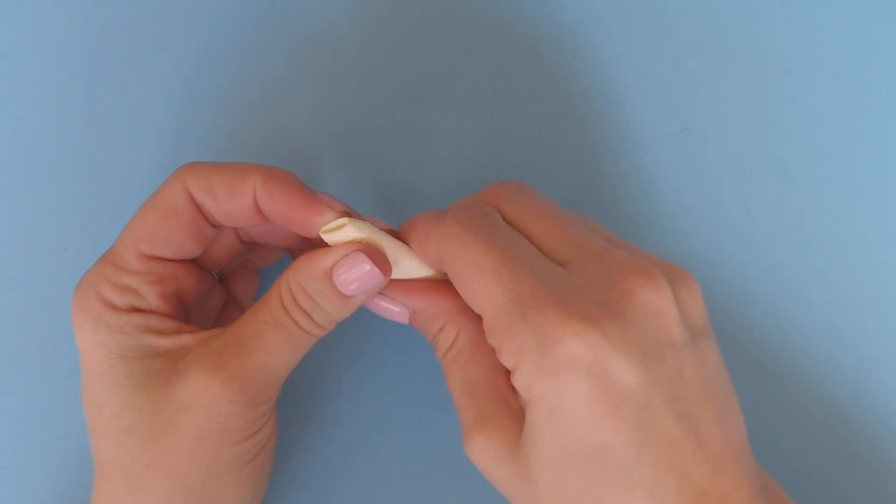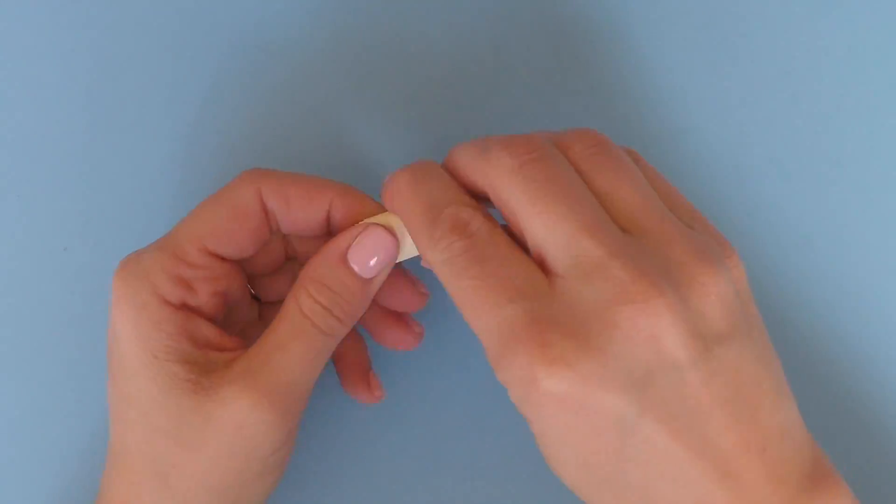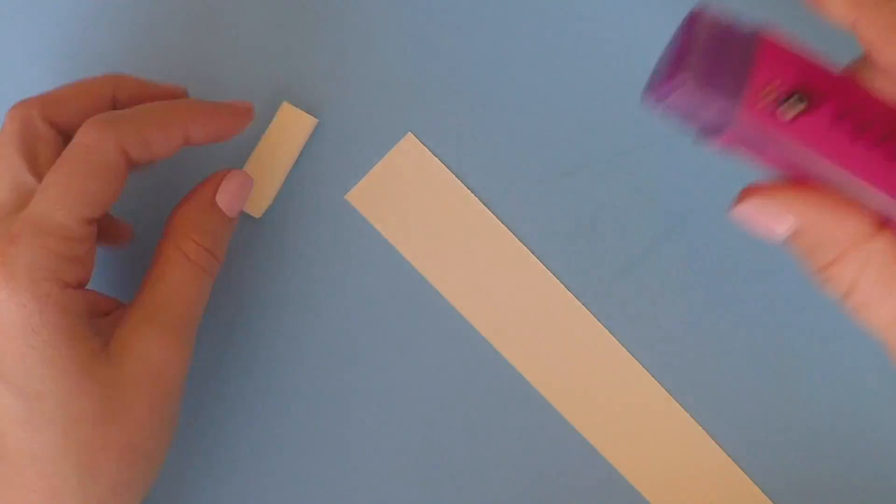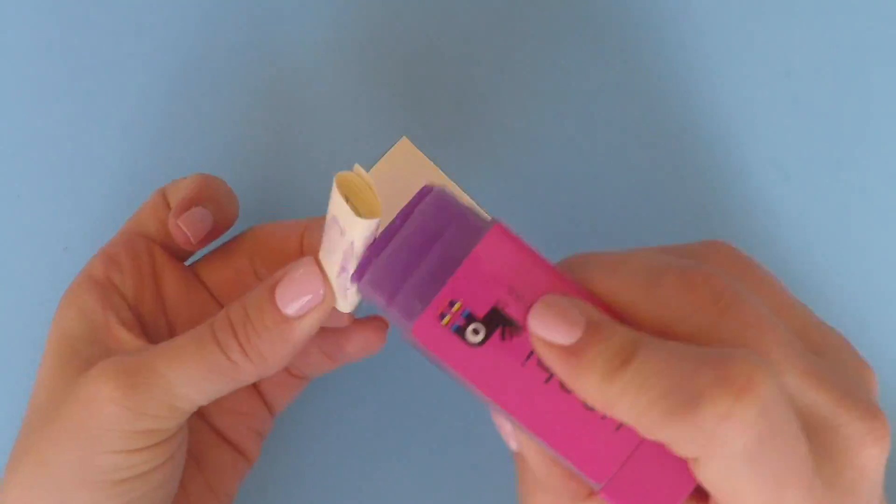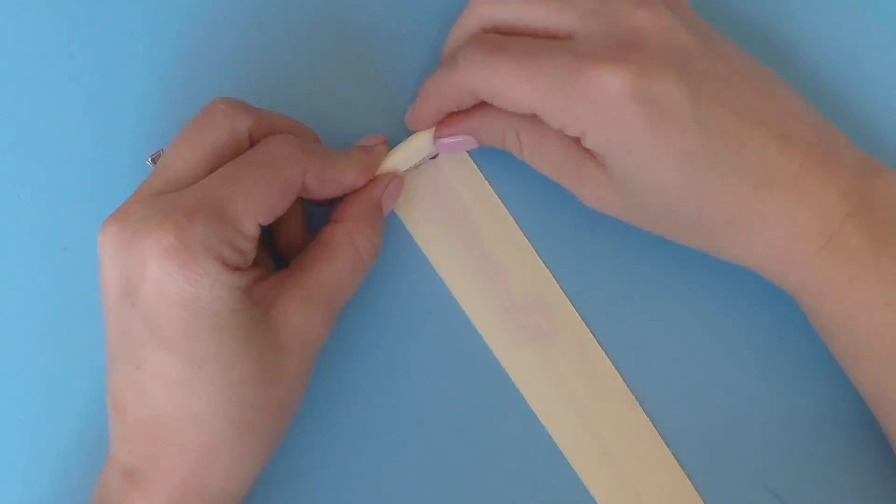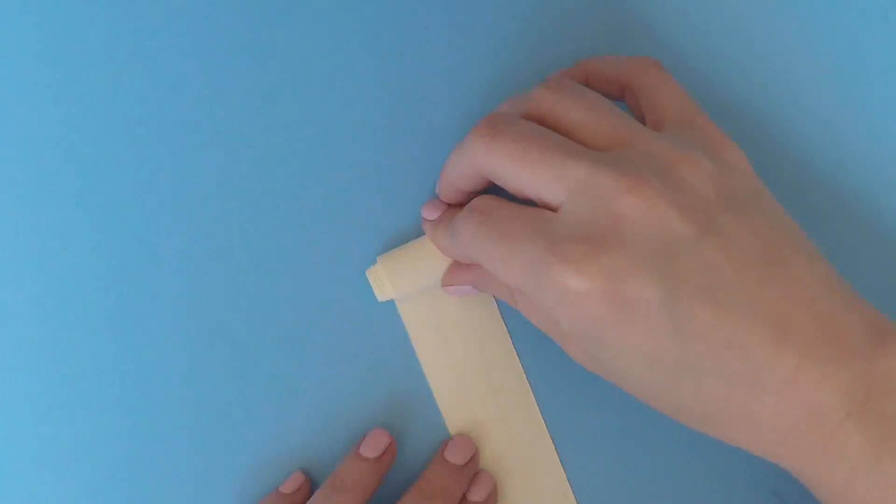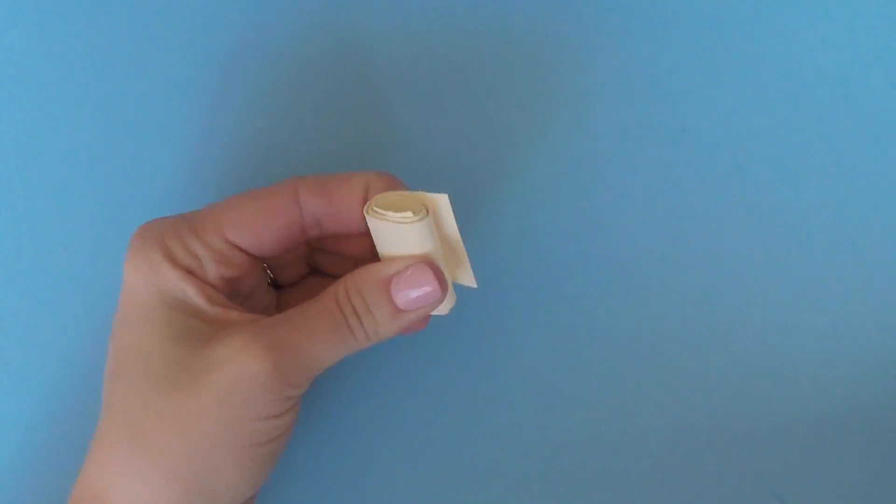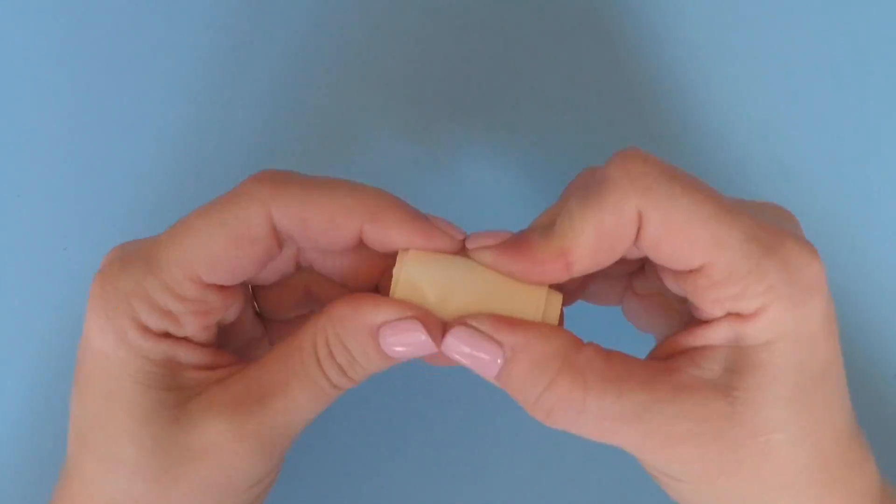And this is one strip. We want to make it a little bit thicker, so we're going to add a second strip. Roll on the second strip just like you did the first. This just makes your tamales a little bit thicker. Secure the end again.